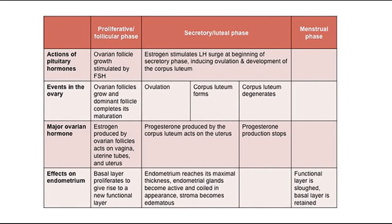This table shows the three phases. Looking at the actions of pituitary hormones: during the proliferative or follicular phase, ovarian follicle growth is stimulated by FSH; whereas in the secretory or luteal phase, oestrogen stimulates the LH surge causing ovulation and development of the corpus luteum. The effects on the endometrium are: during the proliferative phase, the basal layer proliferates and gives rise to a new functional layer; the secretory phase sees maximum thickness, with endometrial glands becoming active and coiled, and the stroma becoming oedematous; and during the menstrual phase, the functional layer is sloughed off while the basal layer is retained.